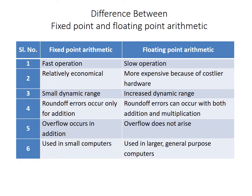This is the difference between fixed point arithmetic and floating point arithmetic. In fixed point arithmetic, operations are performed fast; in floating point, operations are slow. Fixed point is economical and floating point is more expensive. Fixed point has a small dynamic range, but floating point has an increased dynamic range. In fixed point, round-off errors occur only for addition; in floating point, round-off errors can occur for both addition and multiplication. In fixed point arithmetic, overflow occurs in addition; in floating point arithmetic, overflow does not arise. Fixed point arithmetic is used in small computers, while floating point arithmetic is used in large and general purpose computers.